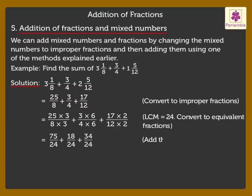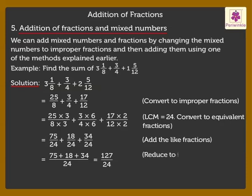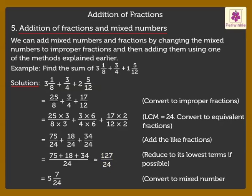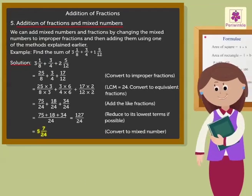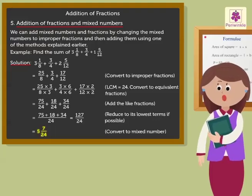Now, add the like fractions. Lastly, reduce the sum to its lowest terms if possible and convert to a mixed number. Thus, we get the answer 5 and 7 upon 24. Kids, try solving a few problems on your own so that it becomes easy for you to understand too.